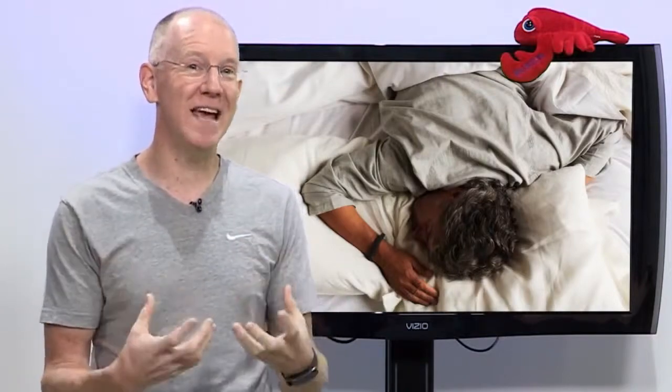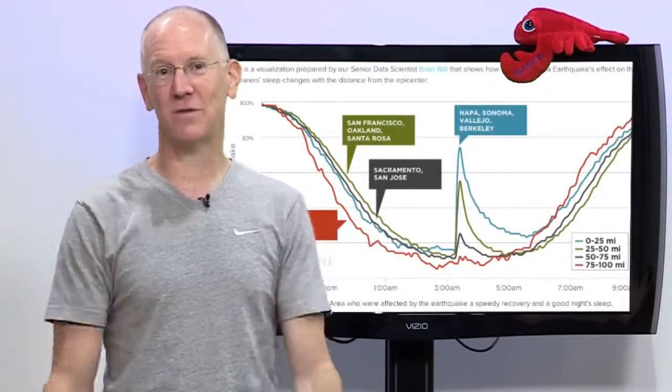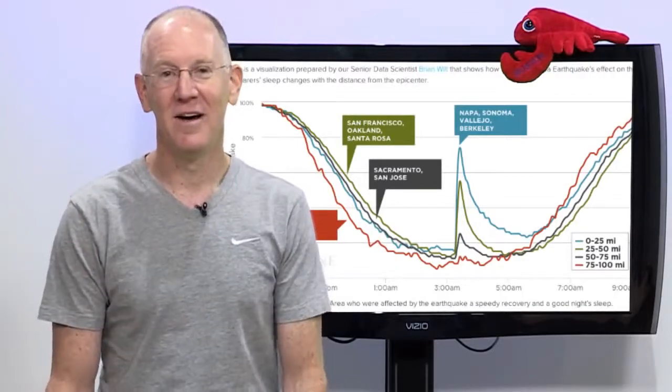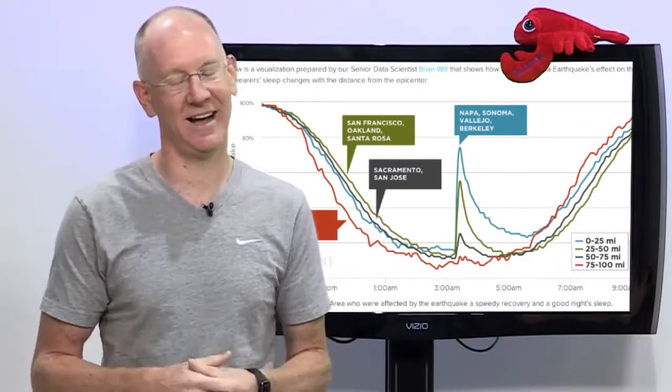who visualized data from Northern California wearers of their UP smart bands the morning of the recent 6.0 Napa quake. The Jawbone UP data shows everyone 15 miles from the epicenter jolted awake at 3:20 AM. Forty-five percent of those users would stay up the rest of the night. And who can blame them? Stop cramping my style, man.